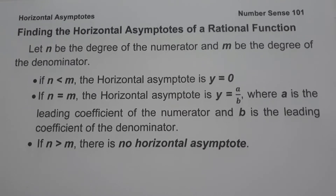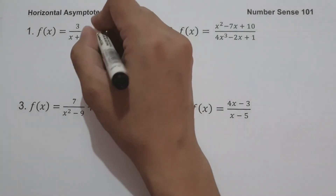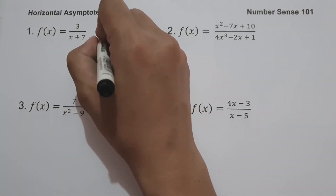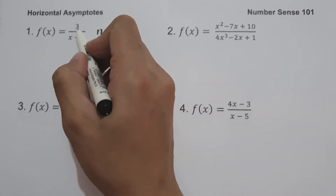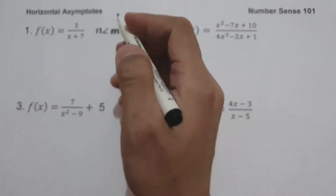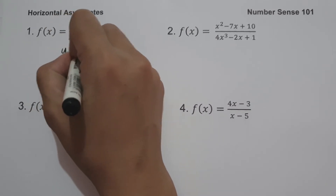Let's start with example number one. We have f(x) equals 3 over x plus 7. Since the degree of the numerator is zero and the degree of the denominator is one, we have n less than m. Therefore, our horizontal asymptote is y equals zero.